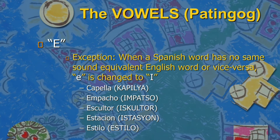Exception: because in every rule there is an exception, so here in the Cebuano alphabet there are also exceptions. When a Spanish word has no same-sound equivalent English word, or vice versa, the E should be changed to I. Like capella — it is capilla in Spanish, and in English it is chapel. So impasto becomes Impatso, and others like Kultor, Tasyong, and Tilo.